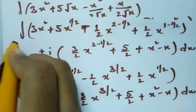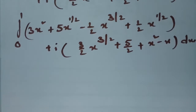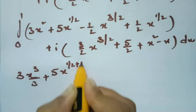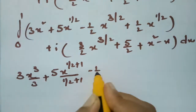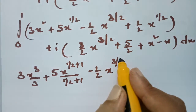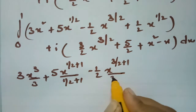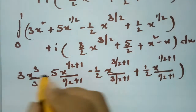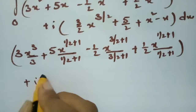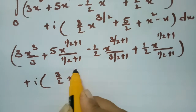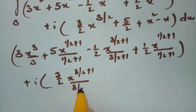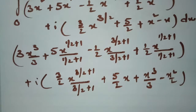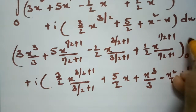Since we transformed everything in terms of x, the limits are 0 to 1. Integrating term by term: 3x²→ x³, 5x^(1/2) → (5·x^(3/2))/(3/2), and for the imaginary parts: x^(3/2) → x^(5/2)/(5/2), and x³/3 - x²/2, evaluated between 0 and 1.